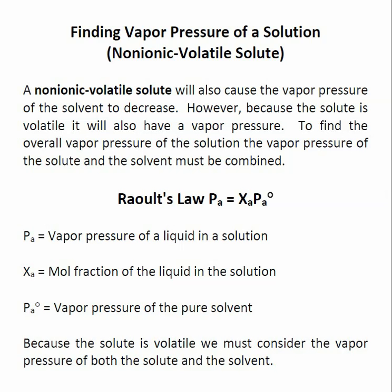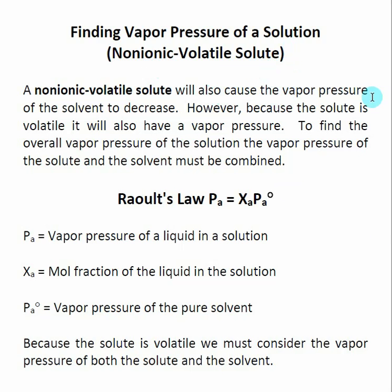Our last calculation involving finding the vapor pressure of a solution involves a non-ionic volatile solute, and this is the trickiest one. Because our solute is volatile, it is actually going to create a vapor pressure, and to find the vapor pressure of the solution, we're going to have to include that. So this calculation is a little bit more complex than the ones we've done beforehand. Our vapor pressure is going to be equal to the vapor pressure of the solvent plus the vapor pressure of the solute.